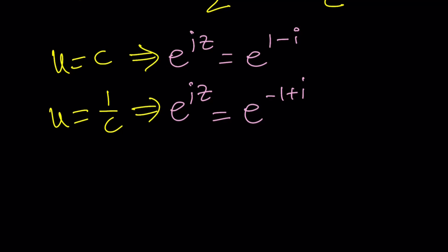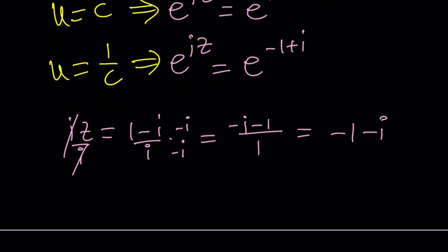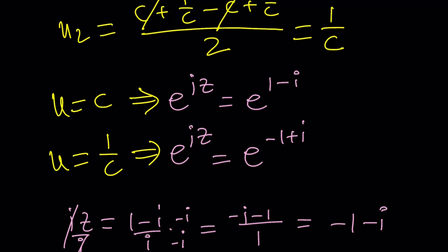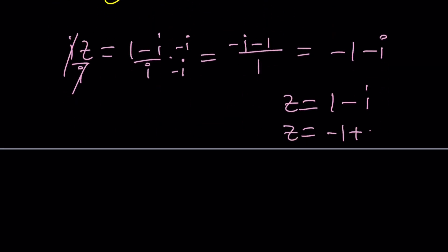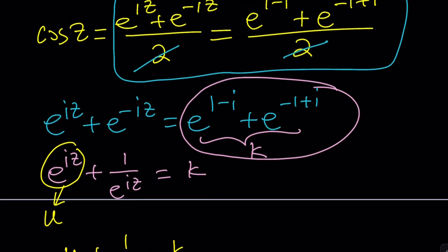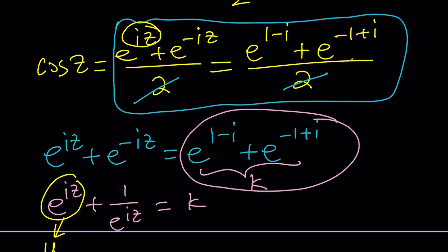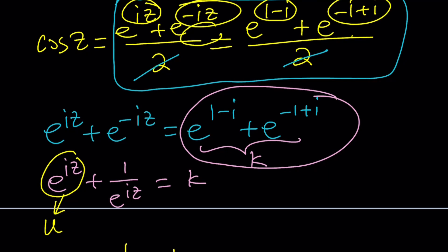The other solution is 1 minus i. So basically, when you get an equation like e to the iz plus its reciprocal equals this expression, these two match up and those two match up, which gives us the exact same results. Going back to the beginning: if e to the iz plus its reciprocal equals the given expression, then those pairs are equal, giving us the same two solutions.